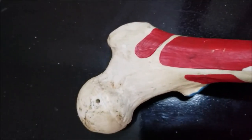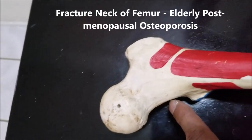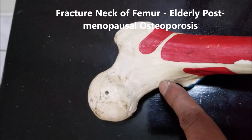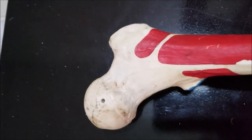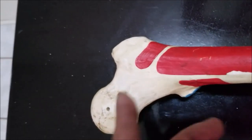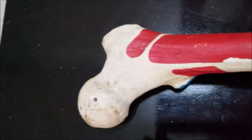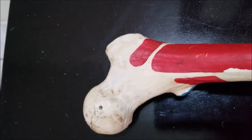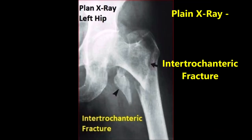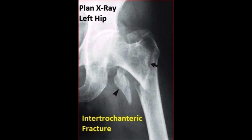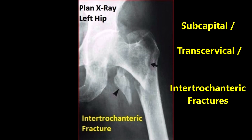The artery to the head of femur supplies only the epiphysis of the head. That brings us to an important clinical correlation. Fracture of the neck of femur is not uncommon, especially in elderly ladies suffering from postmenopausal osteoporosis. It is now believed that because of postmenopausal osteoporosis they had a spontaneous fracture of the neck of femur and then they fell down. Fracture of the neck of femur can be classified as subcapital fracture just under the head, transcervical fracture, or intertrochanteric fracture.